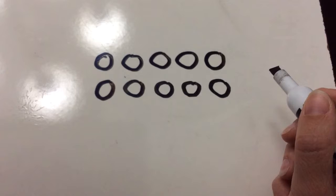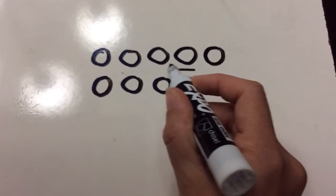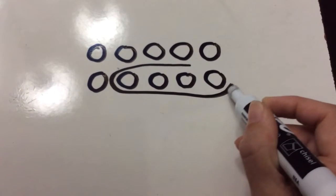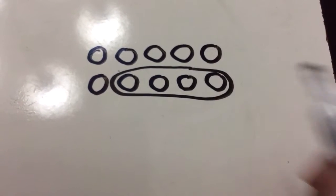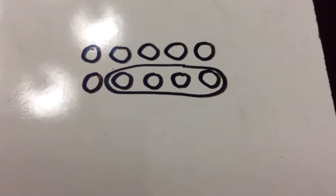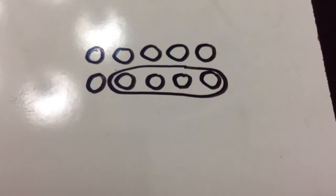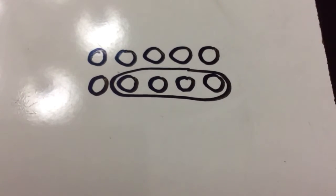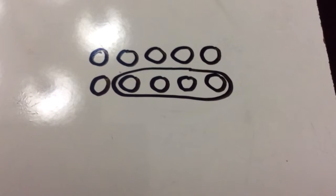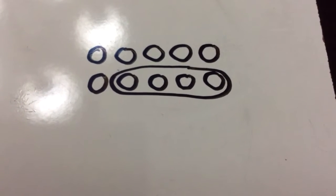Now I'm going to put a ring around the extra circles I drew. How many extra circles did I draw? Four. Now I can see how many more apples I need. I had six apples. I need four more to make ten.